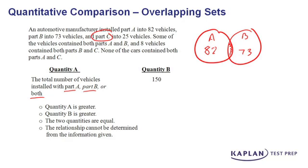So let's not concern ourselves so much with part C just yet. Given this, we're comparing that value to 150. Here's what's important: we don't know about this overlap section between A and B.